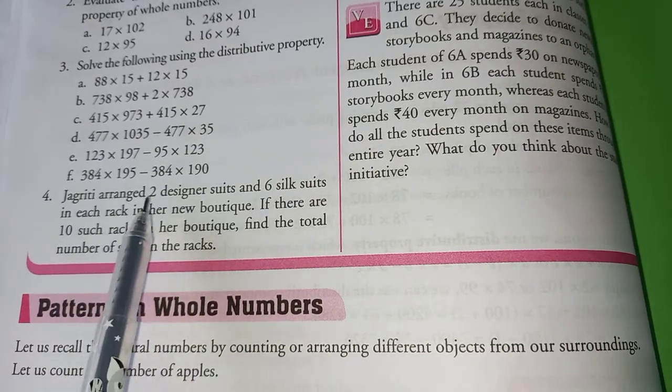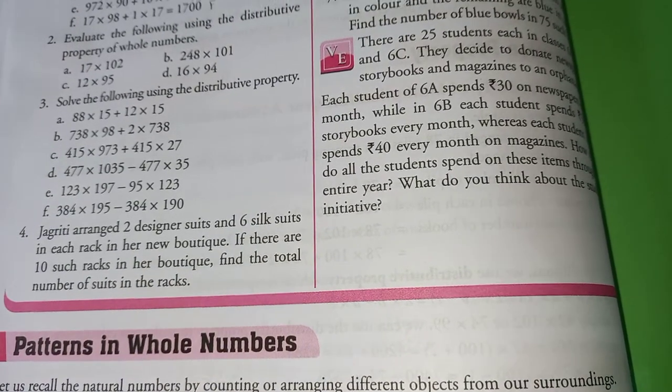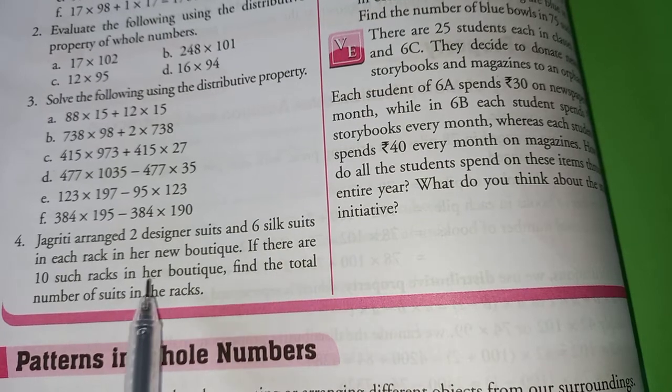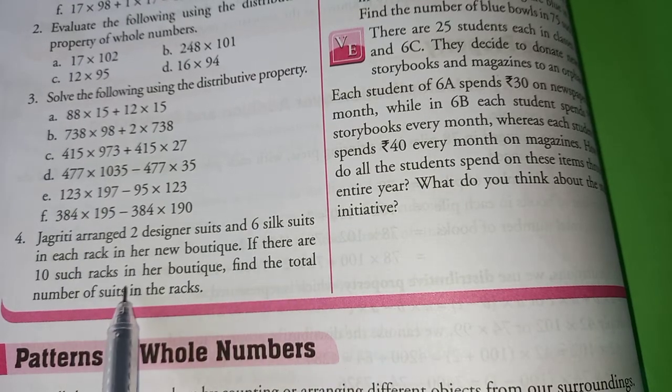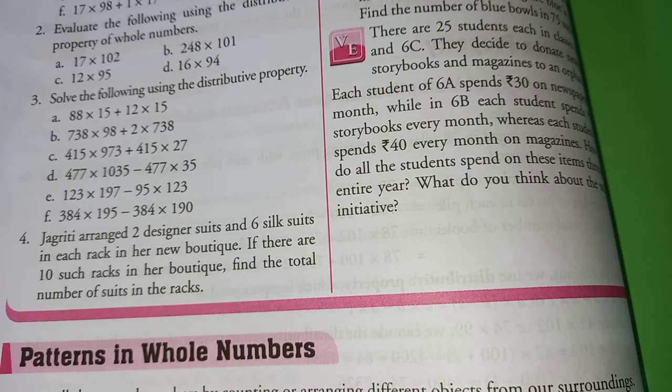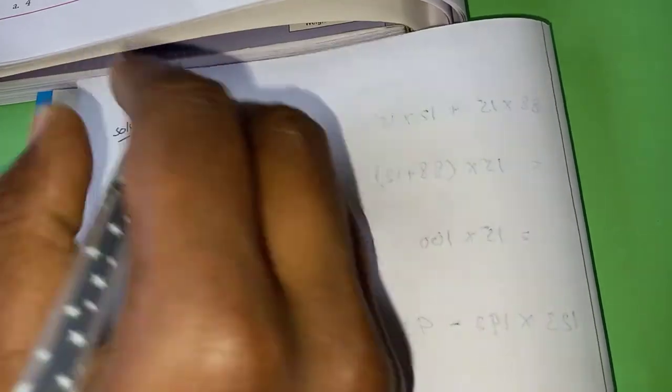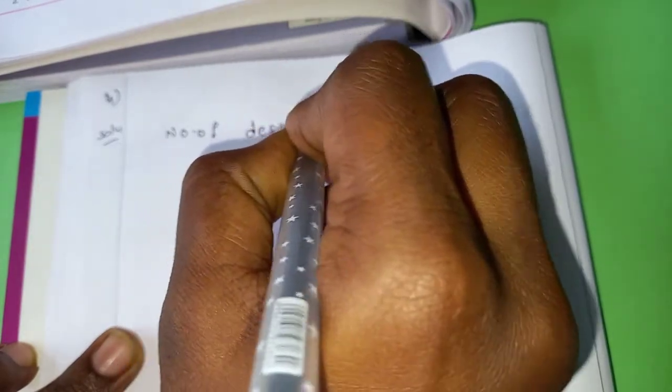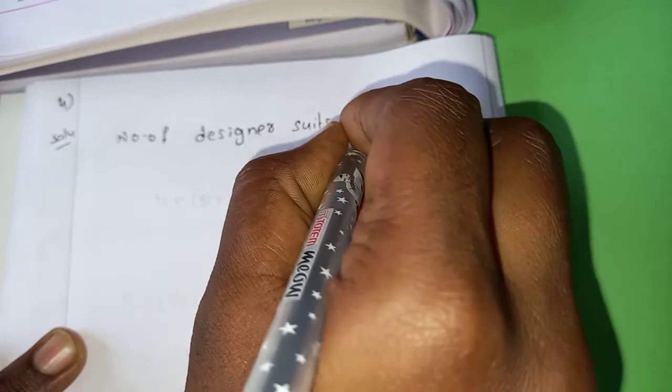Check the fourth one. Jagruti arranged two designer suits and six silk suits in each rack in her new boutique. There is a girl, her name is Jagruti. In her boutique, she arranged six designer suits and six silk suits. Total how many suits in a rack? Eight suits. Six plus two, eight. If there are 10 such racks in her boutique, find the total number of suits in the rack. Simple question. Please copy the complete question. I am just writing the solution.